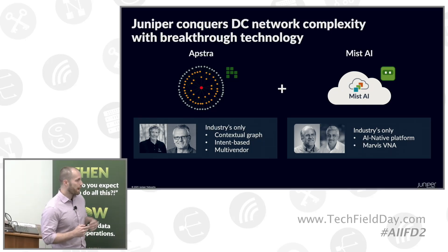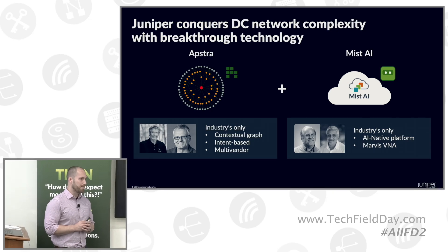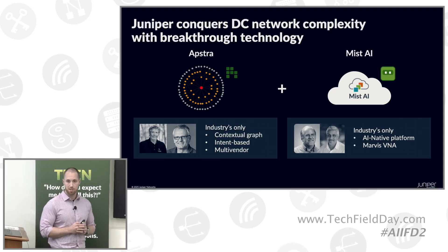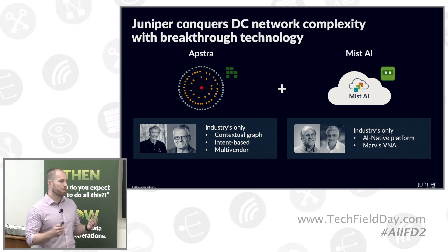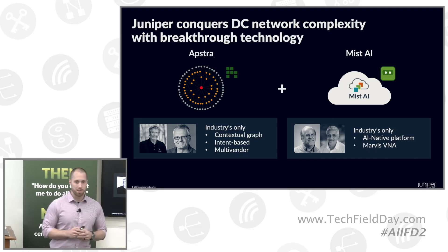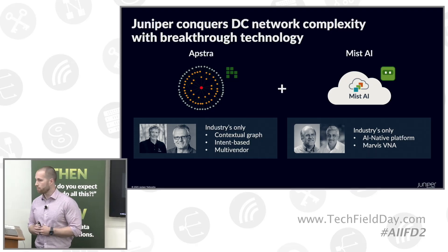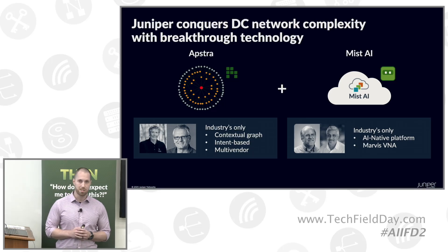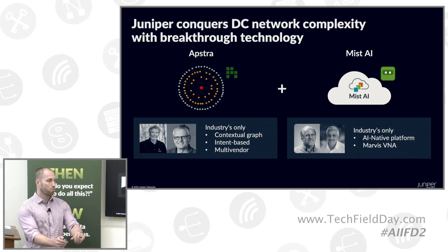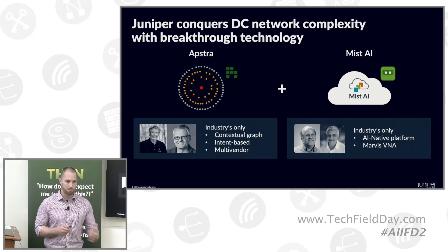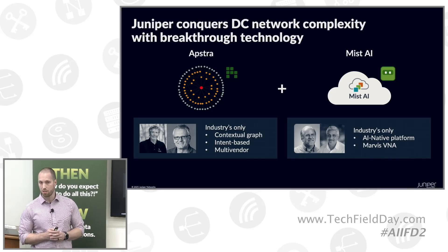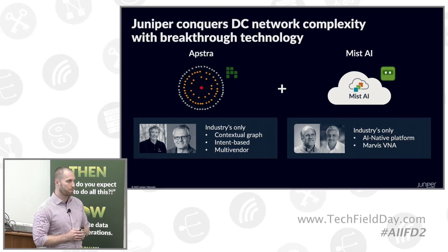We've brought Appstra, which brings the industry's only contextual graph database with intent-based networking and designs, with a vendor-agnostic approach. We've combined that with MIST and its AI to bring the industry's only AI-native platform and Marvis virtual network assistant to the data center. We want to look at the data center holistically as a solution — rather than as a collection of individual switches configured one by one — to deliver the right outcomes.